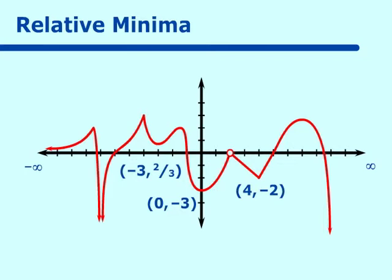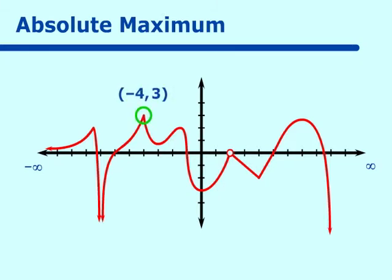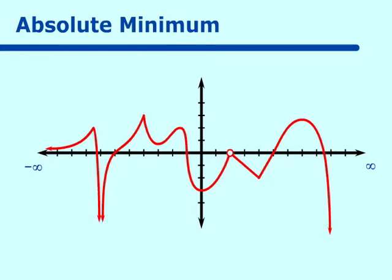What is the absolute maximum? Our absolute maximum is at (negative 4, 3). What is our absolute minimum? We have none, because the function's arrows indicate it goes down to negative infinity in two places, so there is no absolute minimum.